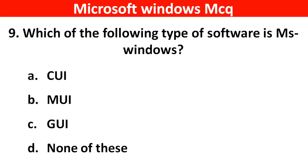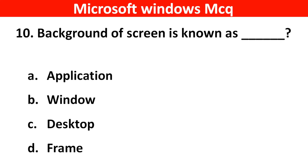Which of the following types of software is Microsoft Windows? Right answer is Option C: GUI, Graphical User Interface. Next question: Background of screen is known as dash dash. Right answer is Option C: Desktop.